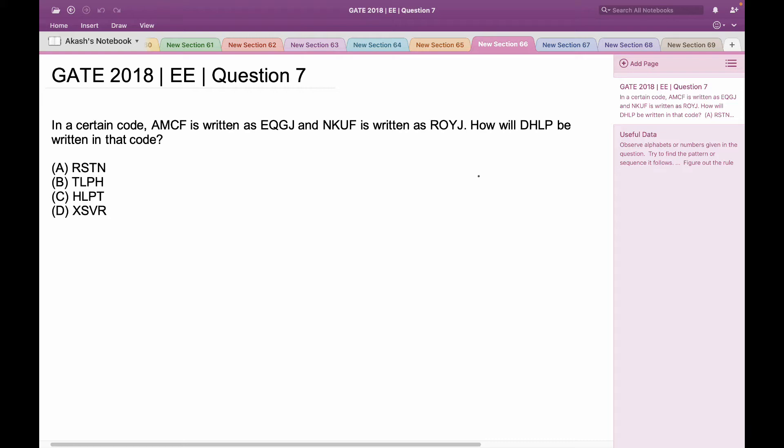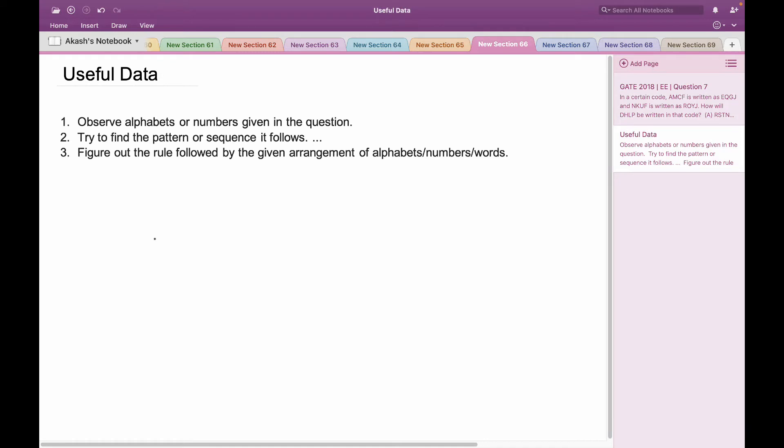This is a problem of coding decoding and in order to solve such problems we need to keep the following points in mind. First, we need to observe the alphabets and numbers and try to find the pattern or sequence it follows. Also, we need to figure out the rule followed by the given arrangements, alphabets, numbers or words. So let's have a look at the problem now.